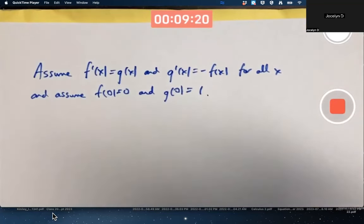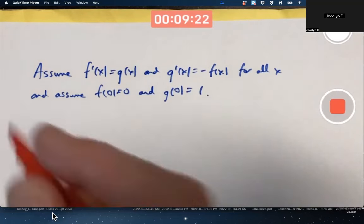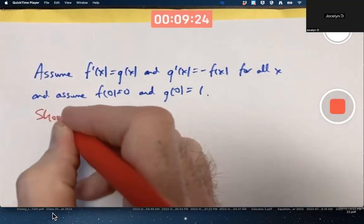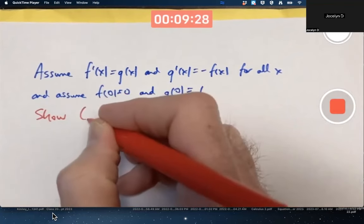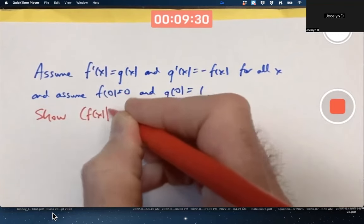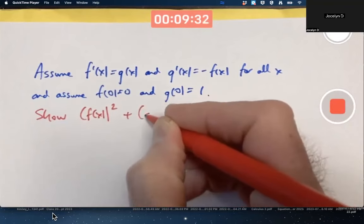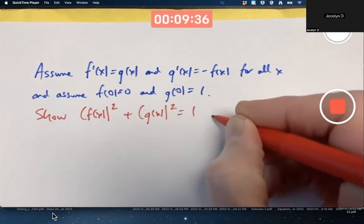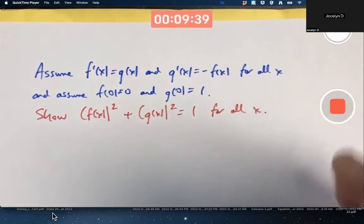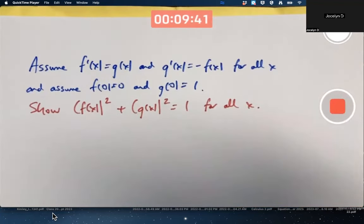There is a point to this. What do we want to show? We want to show, somewhat mysteriously, that if you square each function and add the results, that you always get 1 for all x. That's what we want to show.